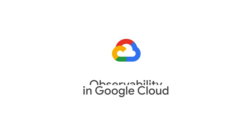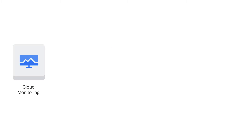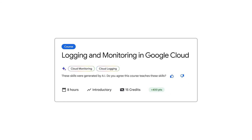Logging, monitoring, and observability in Google Cloud are key steps on your roadmap to Google Cloud visibility. We'll break down the key concepts from cloud monitoring to cloud logging, to error reporting, cloud trace, and cost optimization.